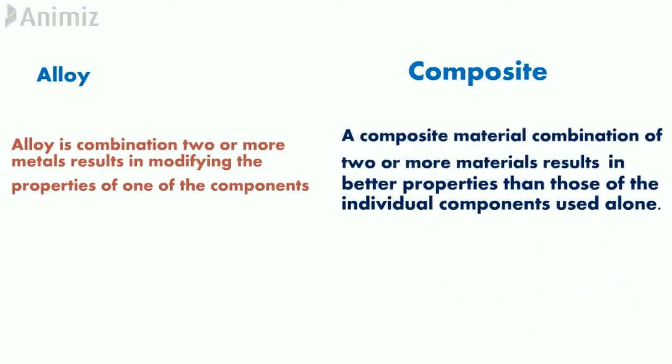So composite material is a combination of two or more materials resulting in better properties than those of the individual components used alone. Take an example.